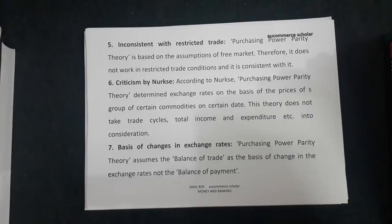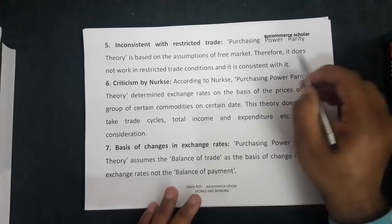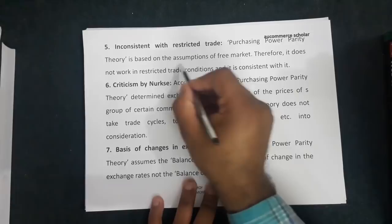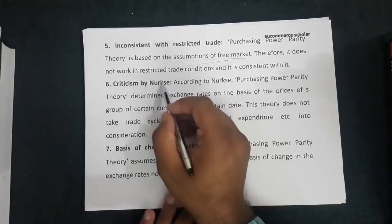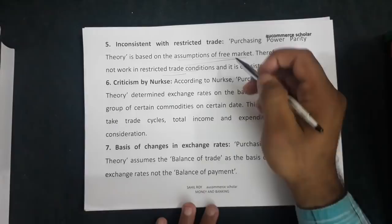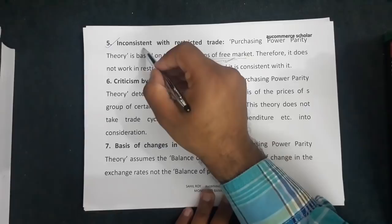The fifth criticism is that it is inconsistent with restricted trade. Restricted trade is trade that is unlawful or illegal. Purchasing power parity theory is based on the assumption of a free market, therefore it does not work in restricted trade conditions. It only works where there is a free market — where you can import and export any goods freely — so where restricted trade practices exist, it is inconsistent.